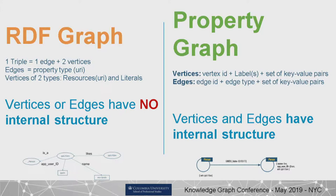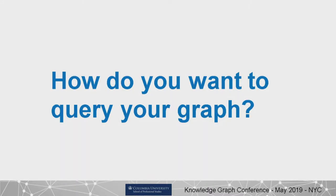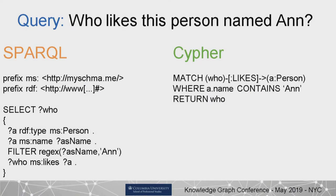Nodes in a property graph have internal structure — they can have properties — and the same applies to relationships. In the RDF graph, nodes and edges are URIs, strings, unique identifiers, and edges express the type of relationship or property. Depending on which paradigm you choose, you query it with different query languages. Going down the RDF route, you query with SPARQL, which is statement-based — your triple pattern includes variables, and that's what makes it a query rather than just facts.